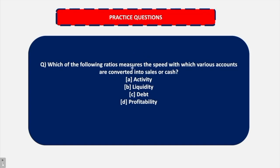The second question is: Which of the following ratios measures the speed with which various accounts are converted into sales or cash? The answer is activity ratios.